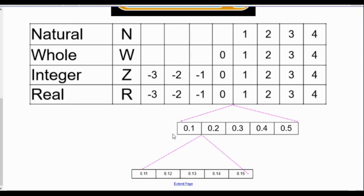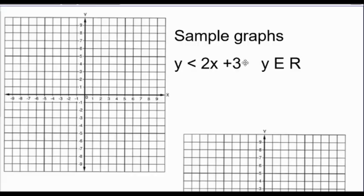For the most part, what we're saying is that natural numbers start at one and they're how you count. Whole numbers are the exact same as the natural numbers, just adding zero. Integers include negatives. And real numbers are all those plus all the numbers that are in between — there's an infinite number of values between zero and one.